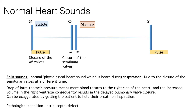A normal variation of heart sounds is split sounds — this is when S2 is heard as two separate sounds. It is a normal, physiological heart sound heard during inspiration, due to closure of the semilunar valves at different times. When we inspire there is a drop in intrathoracic pressure, more blood returns to the right side of the heart, and the increased pressure in the right ventricle results in a delayed pulmonary valve closure. You can get a patient to exaggerate this by holding their breath on inspiration. It can also be pathological, heard in atrial septal defect and some murmurs I'll flag later.